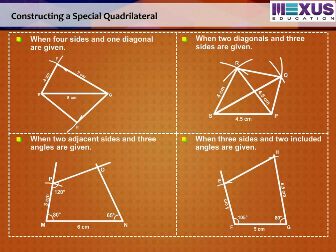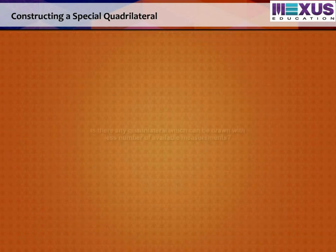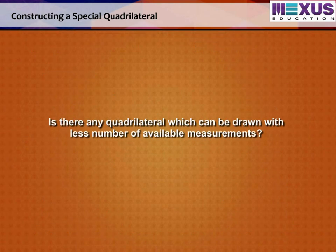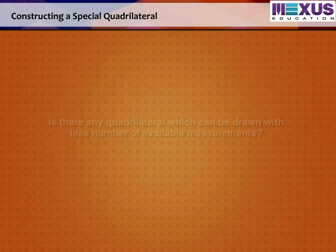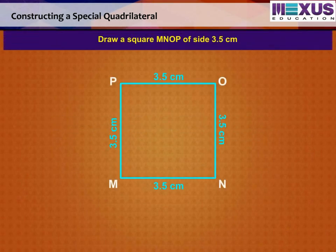Till now, we have seen constructing a quadrilateral using 5 measurements. Is there any quadrilateral which can be drawn with less number of available measurements? The following examples are such special cases. Draw a square MNOP of side 3.5 cm.